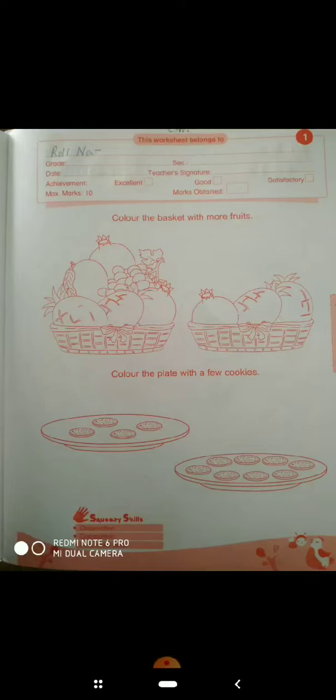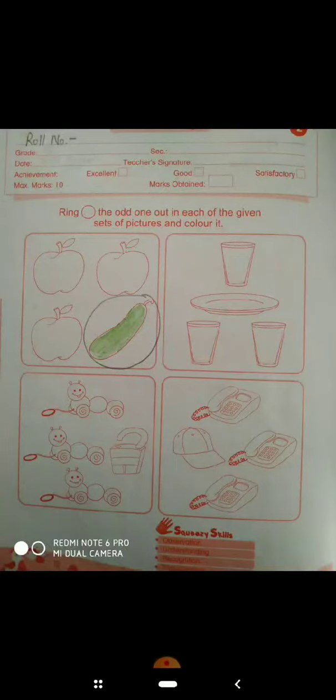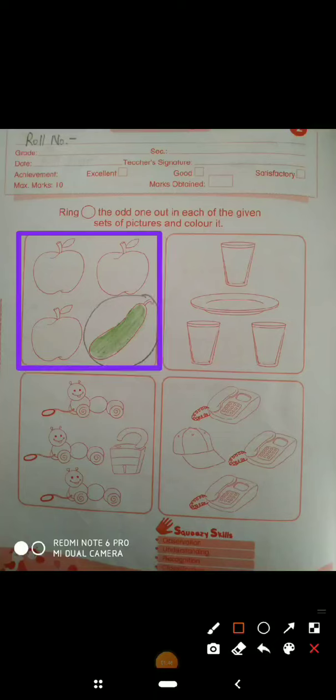Now come on next page, worksheet number two. Ring the odd one out in each of the given sets of pictures and color it.